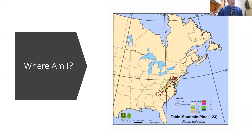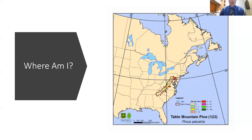First thing — where are you? This is really important, especially when we think about tree ID. I've got a range map here from the U.S. Forest Service — it says Table Mountain Pine, Pinus palustris, which I just noticed is actually the scientific name for longleaf pine. Table Mountain Pine is Pinus pungens. But the point is, it's really important to think in terms of exactly where you are and what species you might encounter.